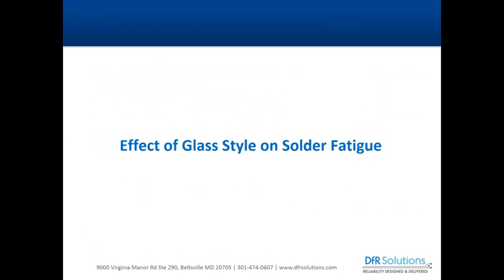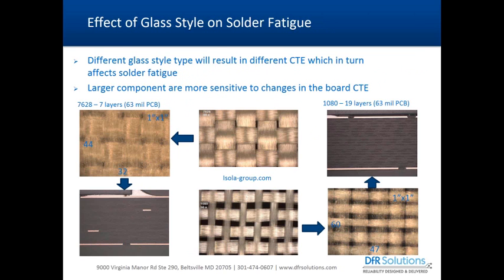The first system level effect we address is the effect of glass tile on solder fatigue. Glass tile is essentially the weave of the glass fiber in your FR4 fiberglass composite board. The influence comes from the density of the fiber and layer count. Depending on your board design — whether 63 mil or 93 mil, 8-layer versus 16-layer — the volume ratio of fiberglass to epoxy resin will change, dictating the final coefficient of thermal expansion and elastic modulus of your PCB in the X, Y, and Z directions.